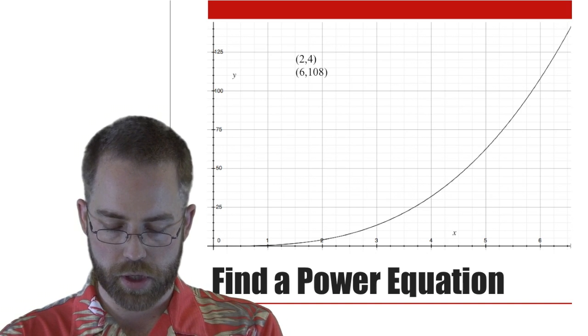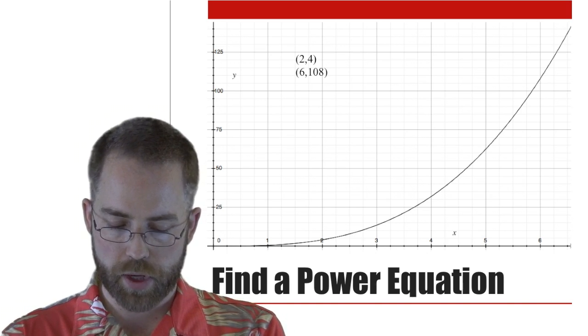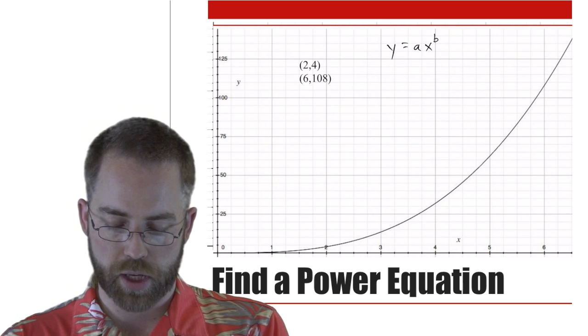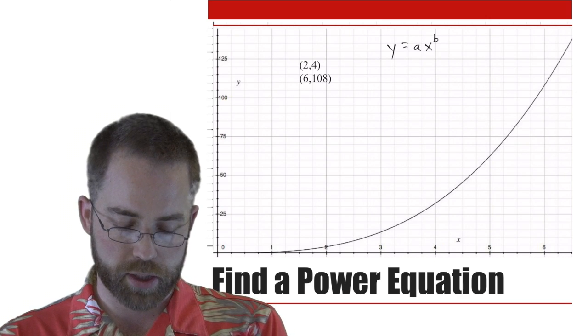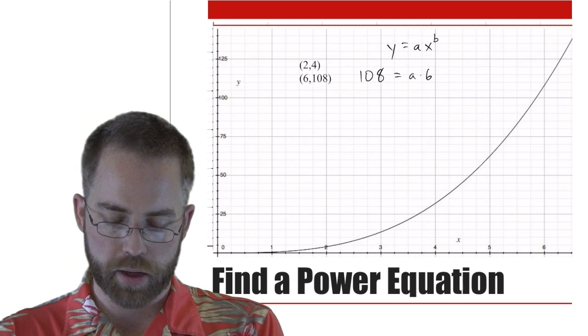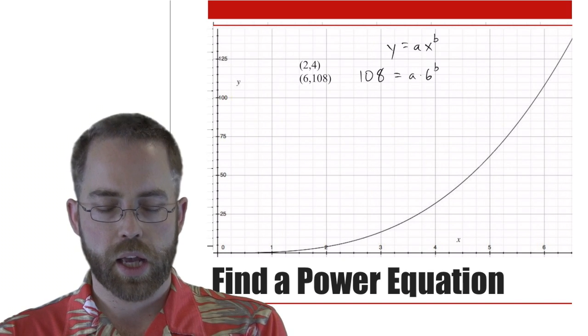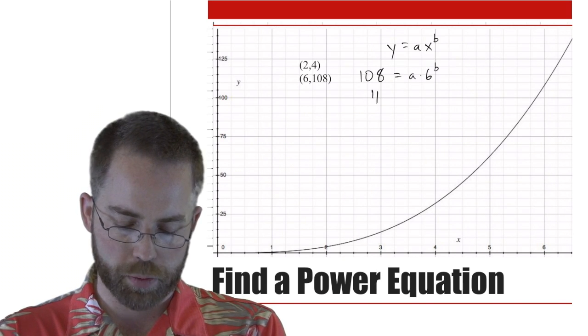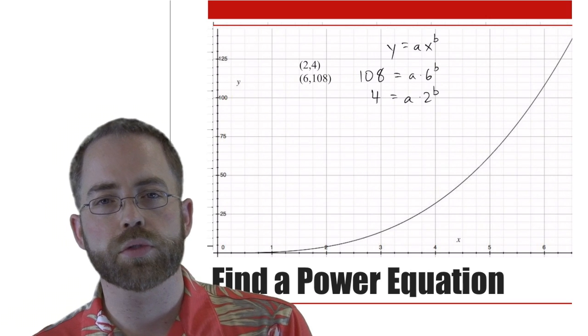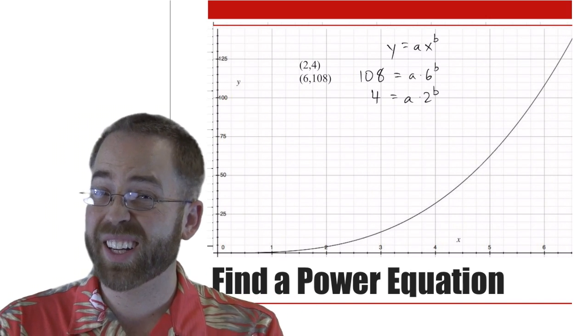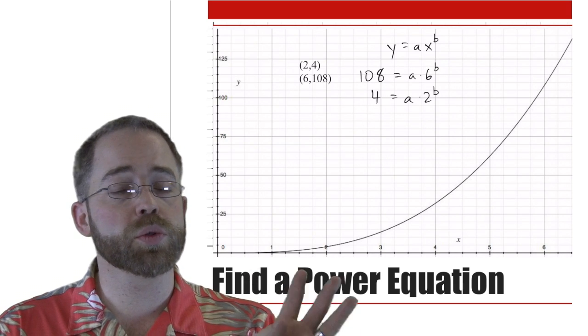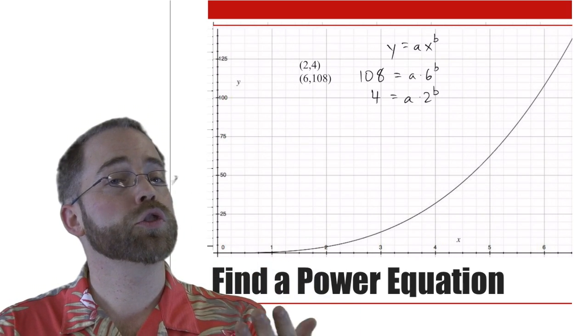So here we have an equation, a graph, that we need to find an equation for. And we've got some sample data points. So we said that the generic equation is y equals ax to the b. So let's plug in our data points and see what that gets us. Well that gets us one equation where we say, okay, the y is 108 and the x is 6 and we don't know b. So that's one equation. And if I look at that first data point, I said, okay, the y was 4 and the x was 2 and that was to the b. Boy, what can I do with these two equations?